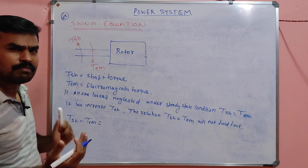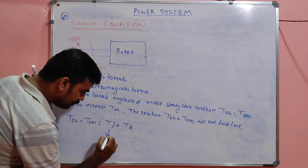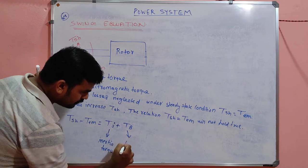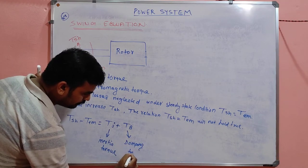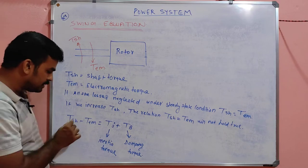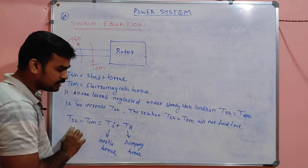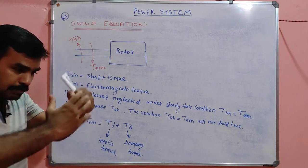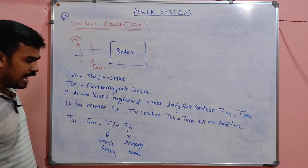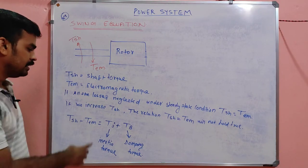Normally TSH minus TEM is zero at steady state. If we suddenly increase TSH, there is a resultant torque, and that resultant torque can be split into two components: Tj plus Tb. Tj is nothing but the inertia torque, and Tb is the damping torque. The damping torque helps to damp out the oscillations in the rotor angle.